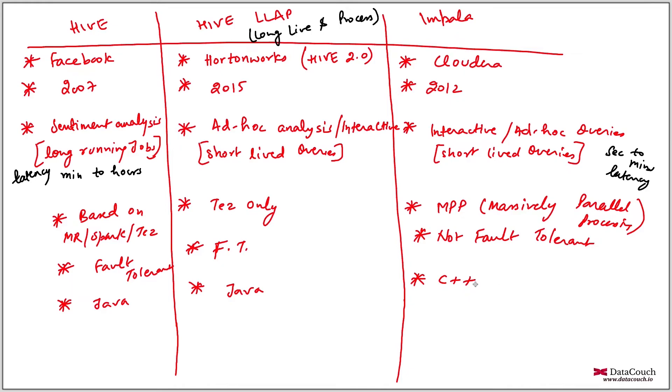Hive limitation is it is very slow. Hive LLAP limitation is it is restricted to Tez only framework, and Impala limitation is it is having no fault tolerance. So these are limitations of these technologies.